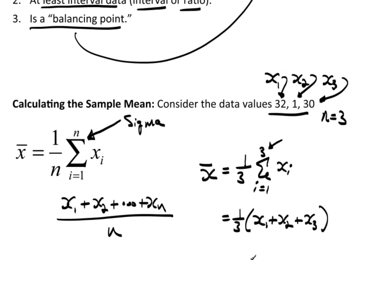This is adding up all the numbers and dividing by 3, which is the same as multiplying by 1/3. So in this case, this would be 32 plus 1 plus 30 divided by 3.